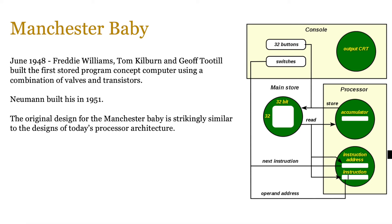People started a race to build a computer that conformed to the von Neumann architecture, because before this, data used to be kept separate from instructions — people had to use punch cards and feed instructions and data in separately. In June 1948, Freddie Williams, Tom Kilburn, and Jeff Tuttle from the University of Manchester built the first stored program concept computer using a combination of valves and transistors. Von Neumann built his in 1951, using valves instead of transistors throughout.